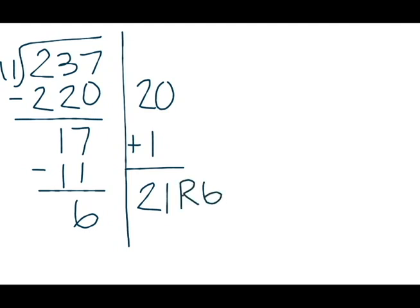With partial quotient, there's several different ways to solve the same problem. So I'll show you the same problem in another way. 237 divided by 11. I'll draw my partial quotient line.